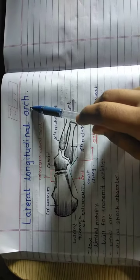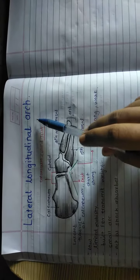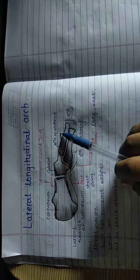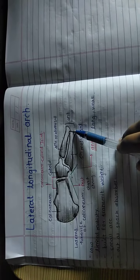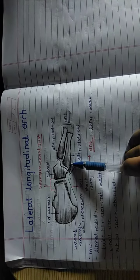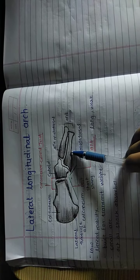The lateral longitudinal arch. The lateral longitudinal arch is characteristically low, limited mobility, built for the transmit of weight and the small arch acts as a shock absorber.